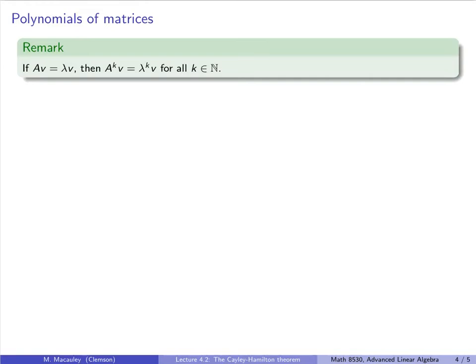Let me remind you of a remark: if we have an eigenvalue-eigenvector pair A·v = lambda·v, then A^k·v = lambda^k·v. In other words, lambda^k is an eigenvalue of A^k with the same eigenvector. This is easy to see: A²·v = A·(A·v) = A·(lambda·v) = lambda·(A·v) = lambda²·v. Inductively, this works for all positive integers k.